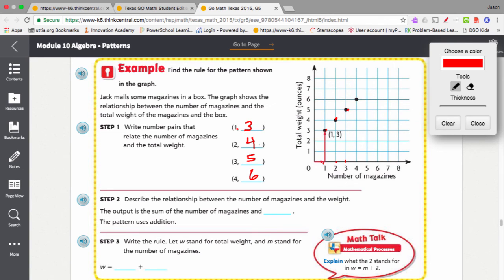Well, that's 1 plus 2 is 3. 2 plus 2 is 4. 3 plus 2 is 5. 4 plus 2 is 6. So, we have an additive pattern. The output is the sum of the number of magazines and 2.